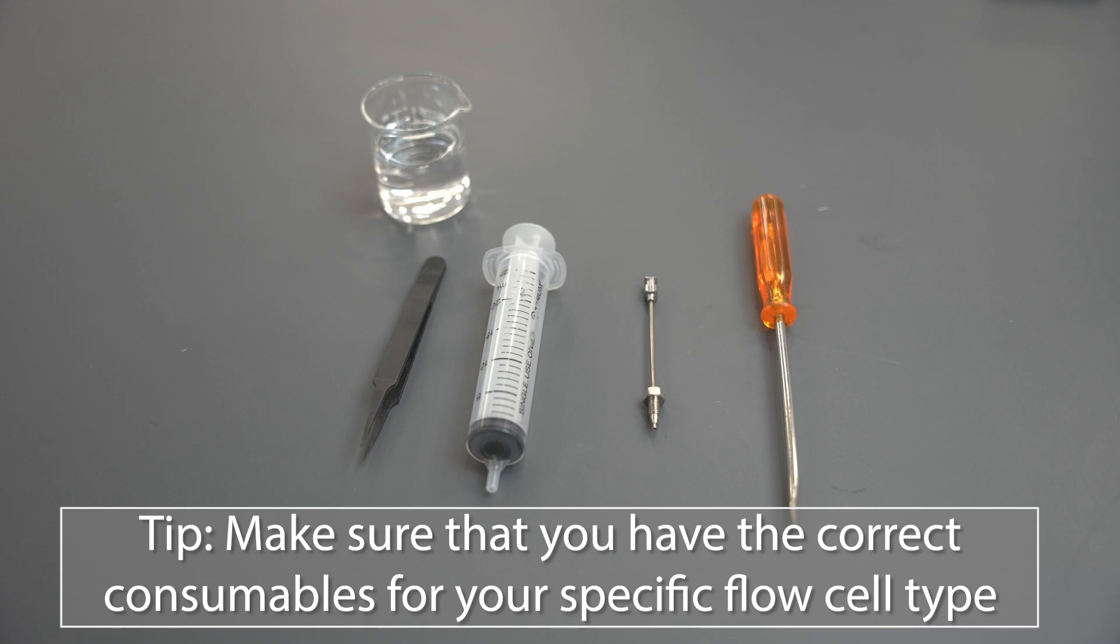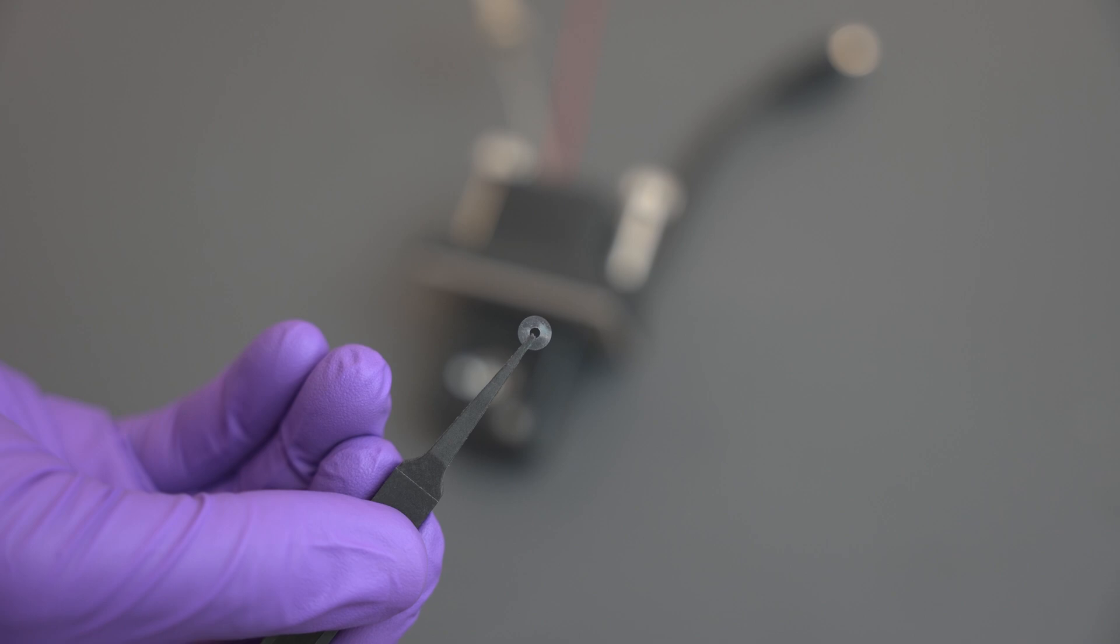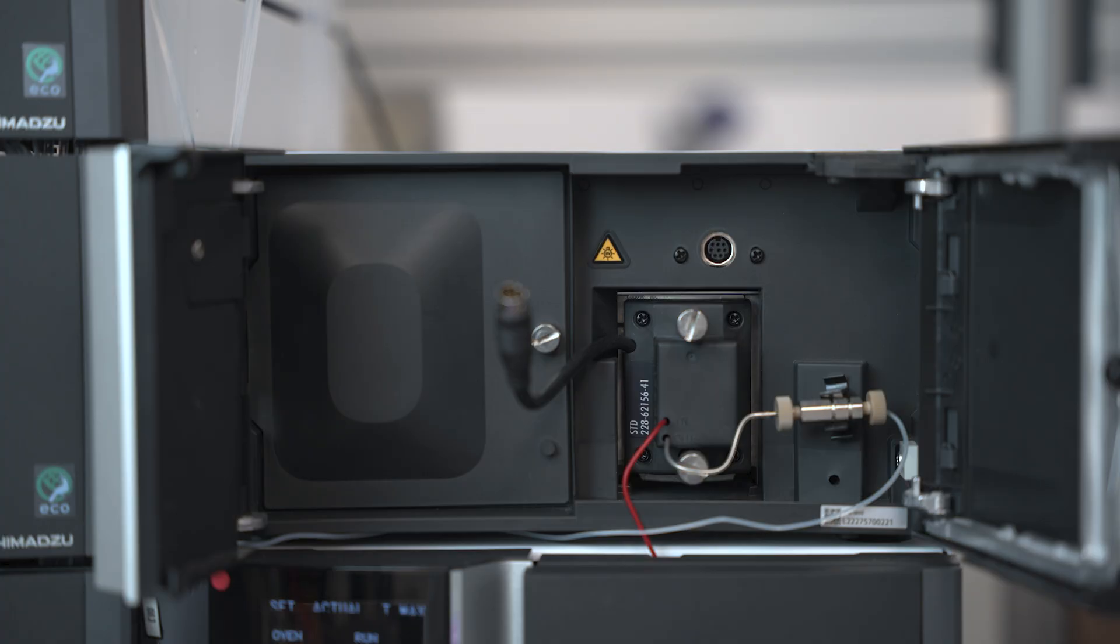Make sure that you have the correct consumables for your specific flow cell type. Please note that there are two gaskets that come with the applicable part number. Confirm that you see both gaskets in the bag before opening it.